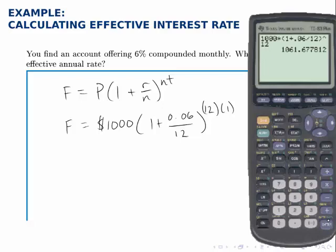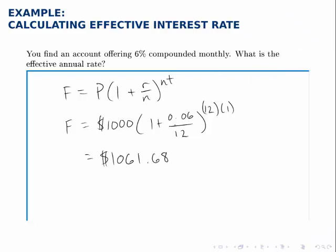So at the end of the year, the account holds $1,061.68. The goal now is to find what simple interest rate, if I use the simple interest formula F equals P times 1 plus RT, what interest rate here would lead to the same amount of growth.